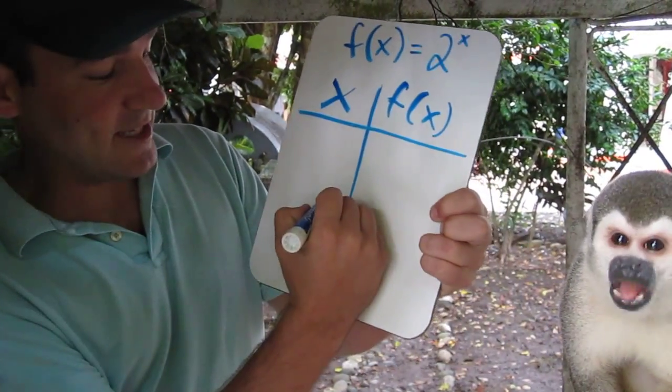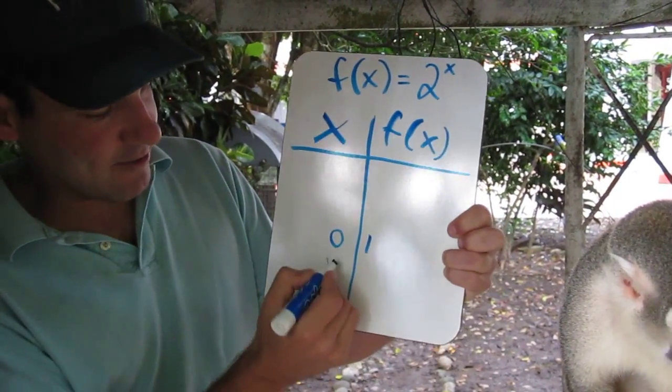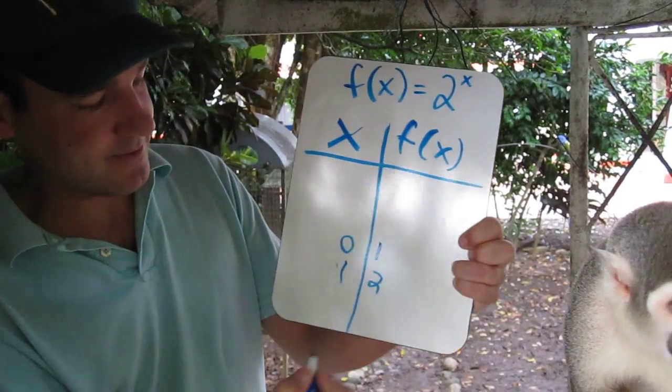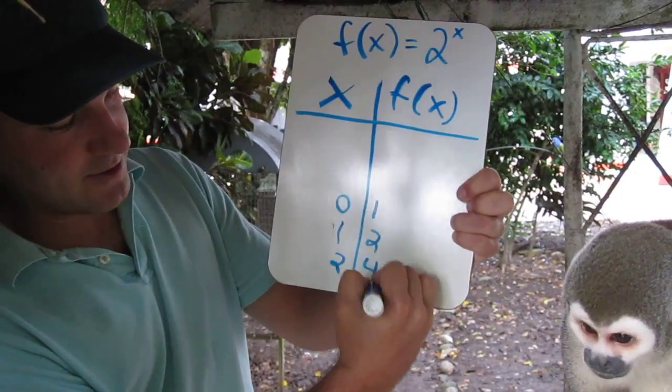Now, when x equals 0, 2 to the zeroth power is 1. When x equals 1, 2 to the first power equals 2. When x equals 2, 2 squared equals 4.